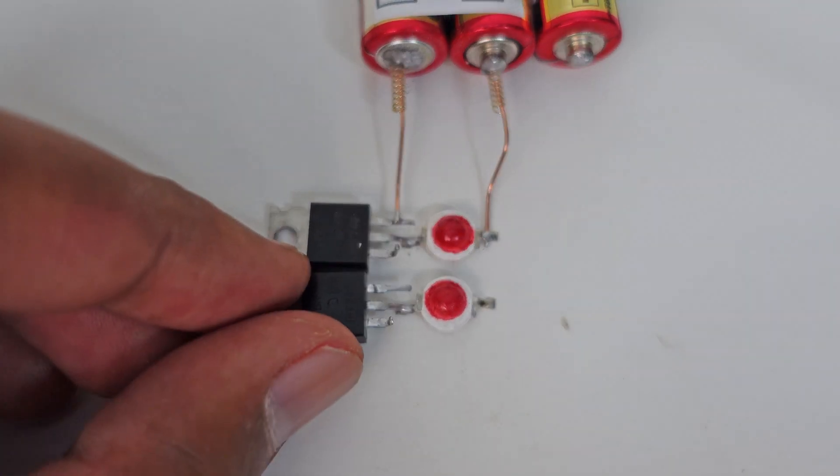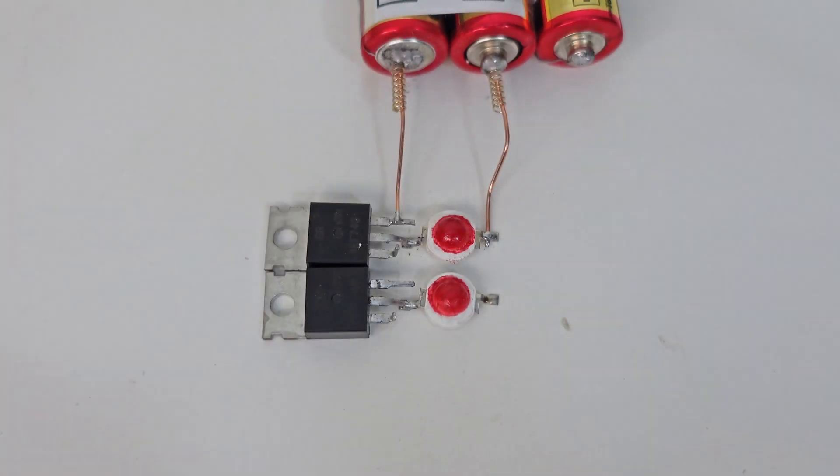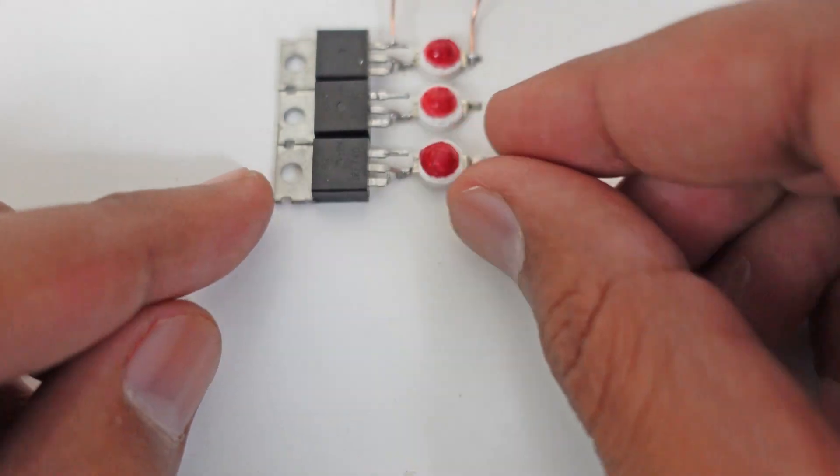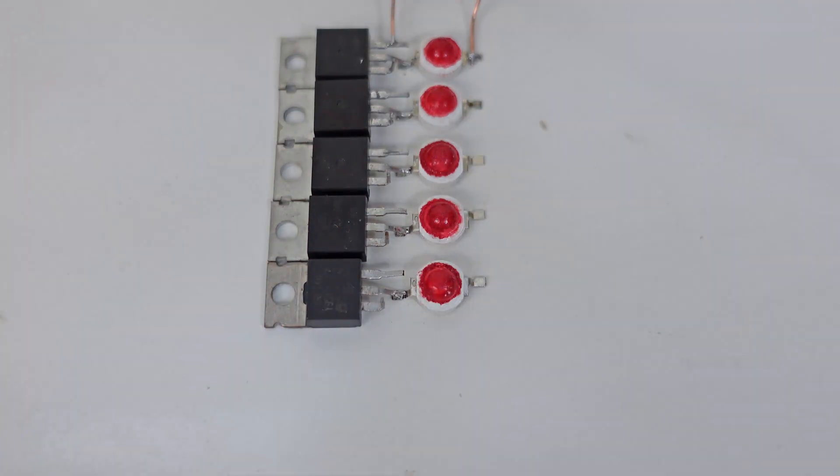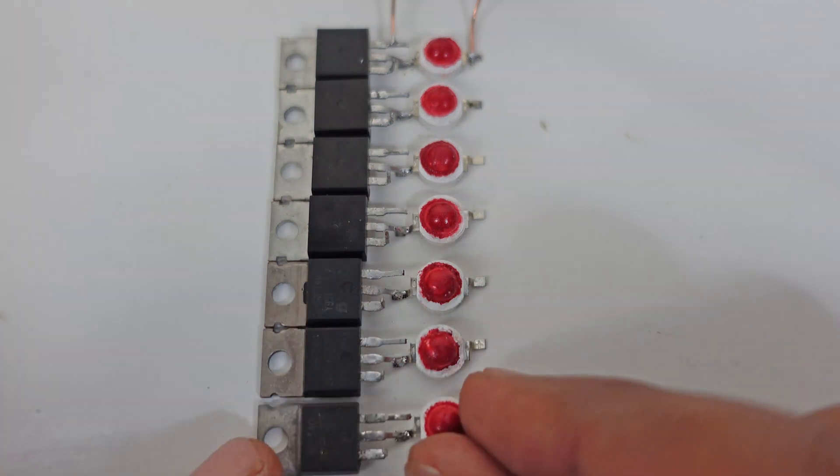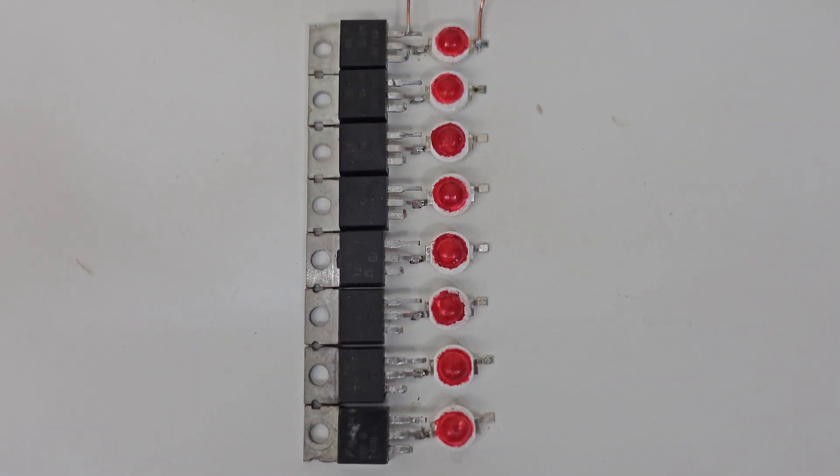This cell can store one value either zero or one. We add it to the system. Similarly we increase the number of MOSFETs to eight: three, four, five, six, seven and eight. Eight bits equals one byte.